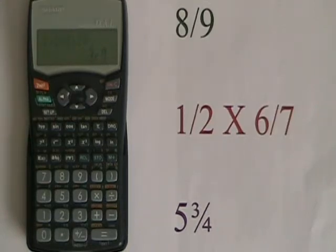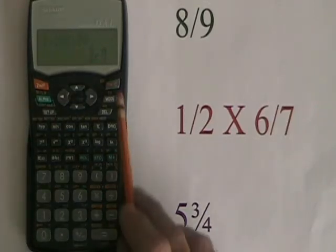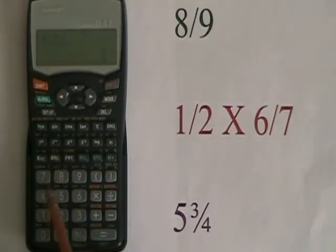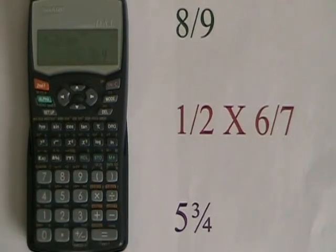To enter a mixed number like 5 and 3 quarters, we do 5, ABC, 3, ABC, 4. This is what a mixed number looks like in this calculator.